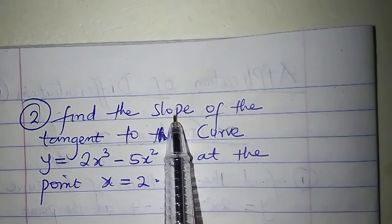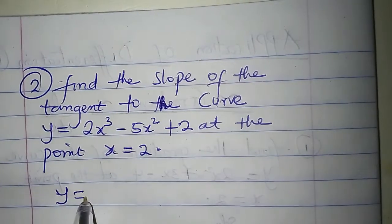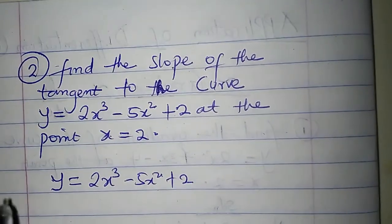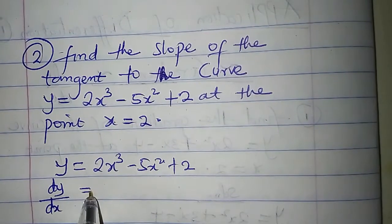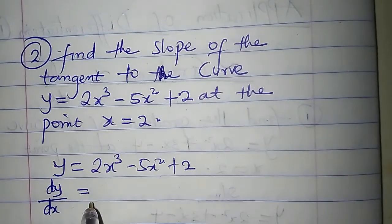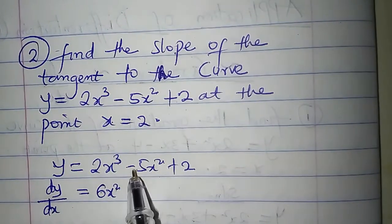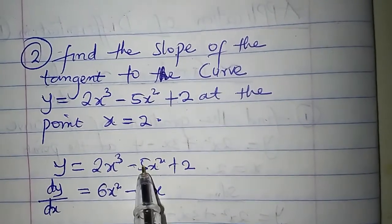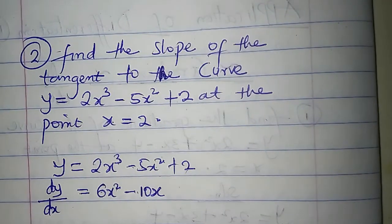So to determine the slope — slope is also gradient — the slope of the tangent, I will need to determine the slope of the curve. We are given y = 2x³ - 5x² + 2. So the gradient function dy/dx equals: differentiate 2x³ to get 6x² (3 times 2 is 6, 3 minus 1 is 2); differentiate minus 5x² to get minus 10x (2 times minus 5 is minus 10, 2 minus 1 is 1); differentiate 2 to get 0.